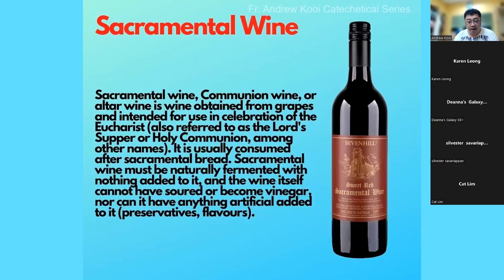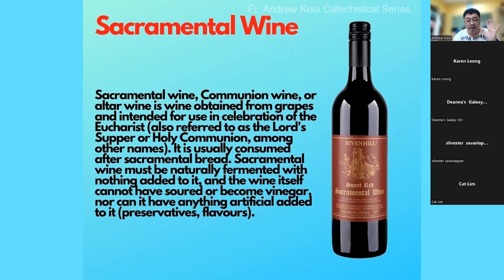Sacramental wine is the wine used for the Mass which will later be transformed into the blood of Christ. It must be made out of naturally fermented grapes without anything added — no other flavors, not apple cider, not ribena, nothing like that. It must be naturally fermented grapes only, and it cannot be soured or become vinegar. If the wine has turned, it cannot be used for the Mass anymore.